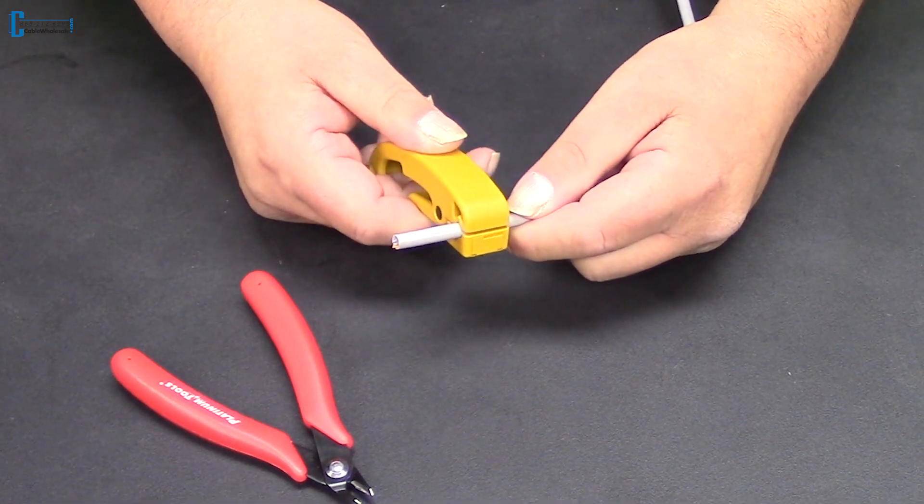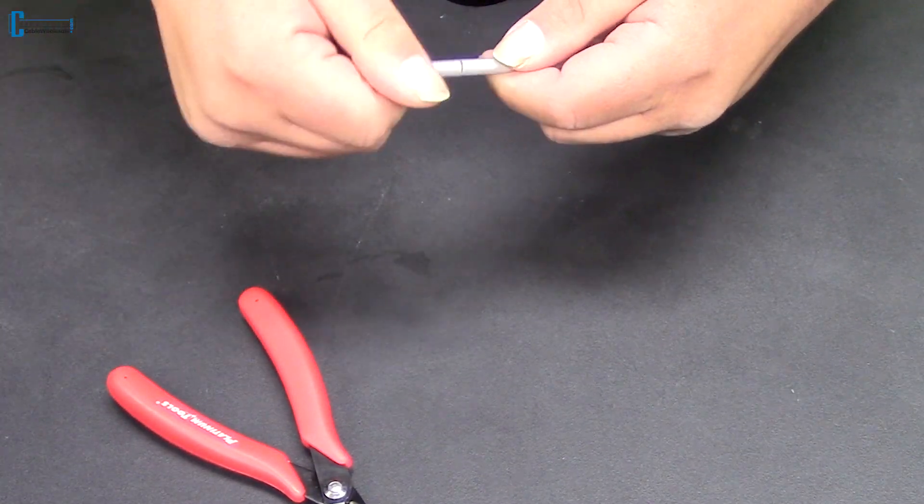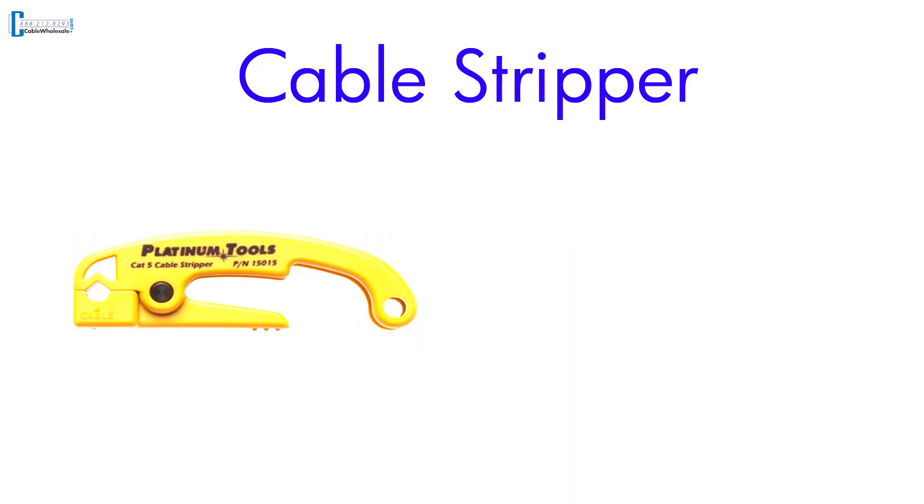Using your cable stripper, score the outer jacket. The outer jacket will come away. Using a cable stripper will ensure that you don't nick any of the wires inside and take the guesswork out of knowing how deep to cut the jacket to expose the inner wires.